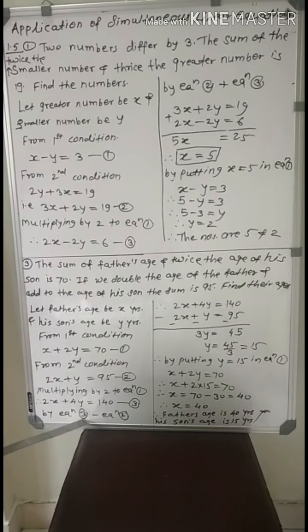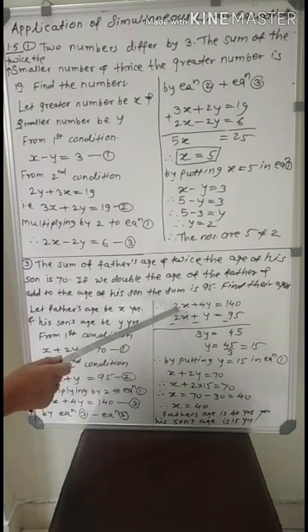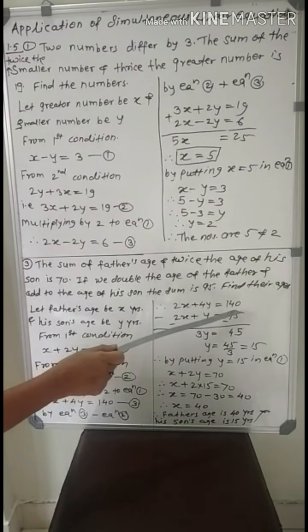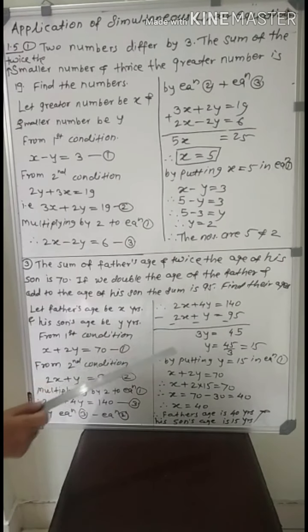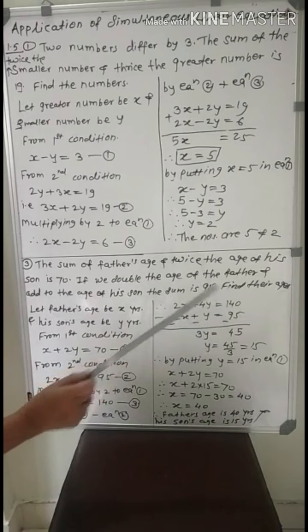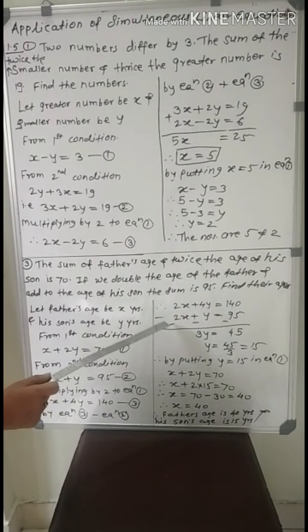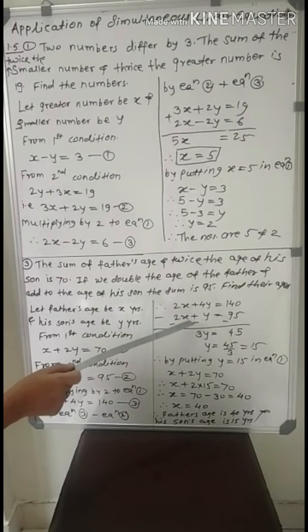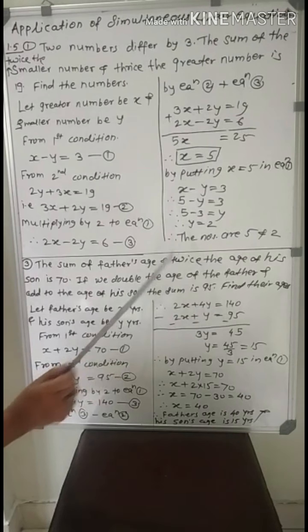By equation 3 minus equation 2, write equation 3: 2x plus 4y equal to 140, minus equation 2: 2x plus y equal to 95. Subtraction means by changing the sign. Plus 2x becomes minus, plus y becomes minus y, and plus 95 becomes minus 95.